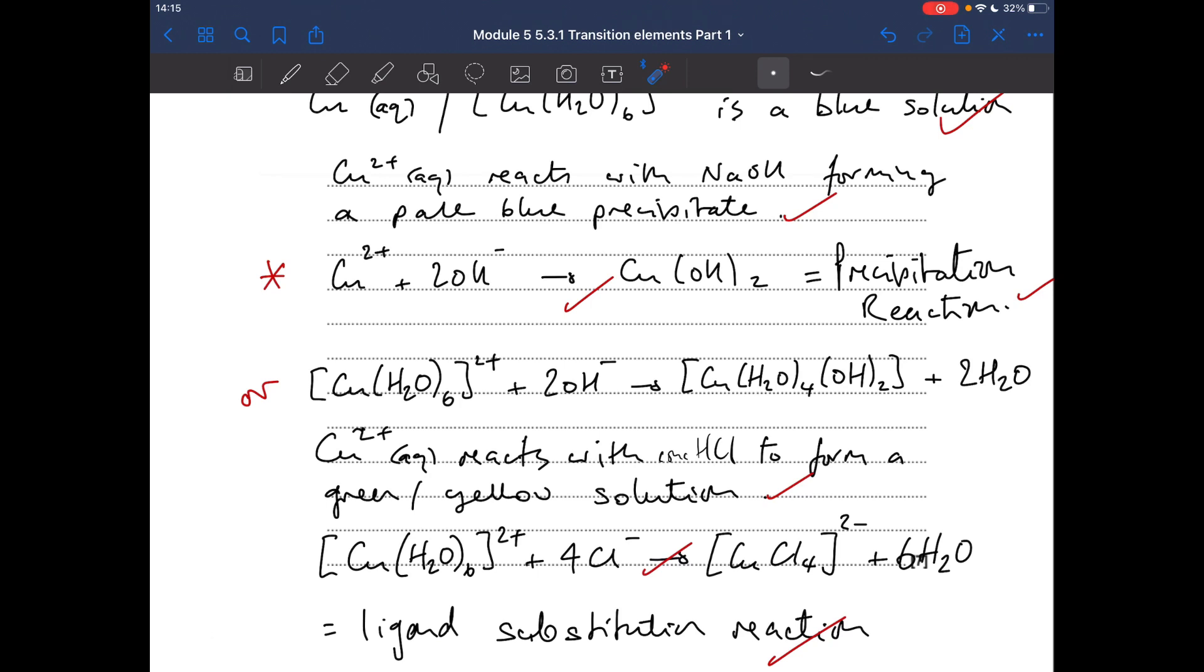In terms of colour, remember this thing's blue. Pure copper tetrachloro 2 minus is actually yellow. But it often exists in an equilibrium reaction. So if you've got this blue species and this yellow species present in the same test tube, it can often look green. So they'll accept either of those.